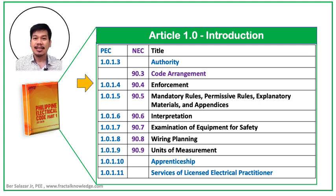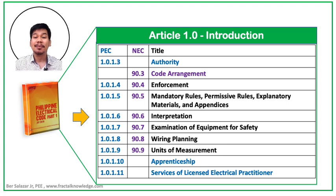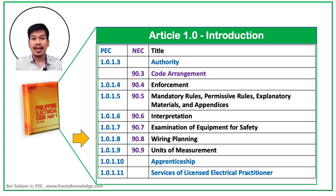Section 1.0.1.3 is about the authority of the Code, which we will discuss in detail. Section 1.0.1.4 is about enforcement of the Code, which the details will also be discussed. Section 1.0.1.5 is about mandatory and permissive rules — we have an explanation in PEC Series 1, so you can go back to Series 1 if you haven't watched it yet. It informs us of the explanatory materials we need to understand and the use of appendices. Section 1.0.1.6 is about the interpretation of the Code, and we will see its content in detail. Section 1.0.1.7 is about examination of equipment for safety, where you will know the agency responsible for this.